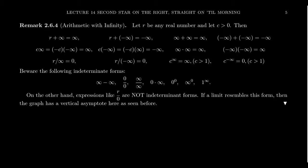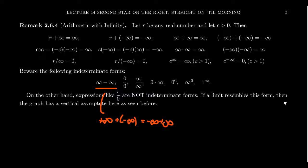We have to make sure our summoning circles are drawn correctly here, otherwise we might summon the wrong demon. One of these demons in our numerology we refer to as indeterminate forms. There are certain forms involving infinity or zero — which is sort of the reciprocal of infinity — for which we do not have enough information to determine what the limit is going to be. Therefore, I can't give you a general arithmetic statement about infinity. The first one we encounter is infinity minus infinity, which is the same as positive infinity plus negative infinity — that is an indeterminate form.